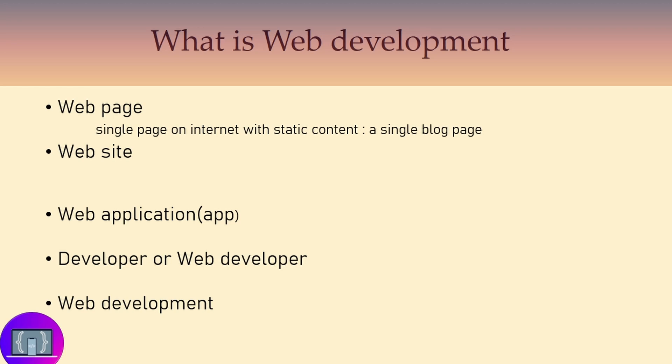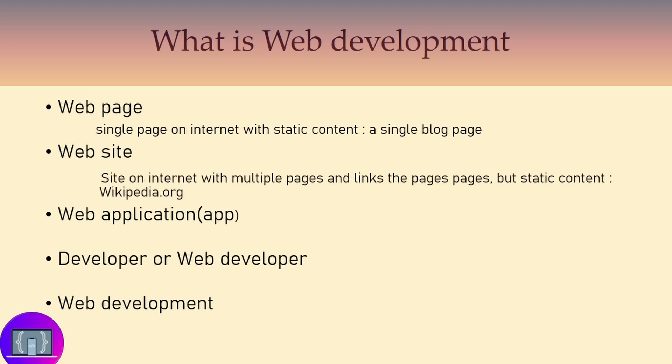A website, on the other hand, is going to contain multiple pages and there are going to be links between those different pages. A website has static content, and an example of a website is wikipedia.org. As we know, wikipedia.org has links to different pages, so it's a website.